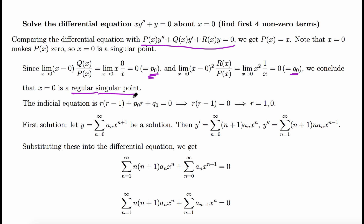That means this equation has a series solution and we can write down the indicial equation. Since we've already computed P₀ = 0 and Q₀ = 0, the indicial equation becomes r(r - 1) = 0, which implies r = 1 and r = 0.